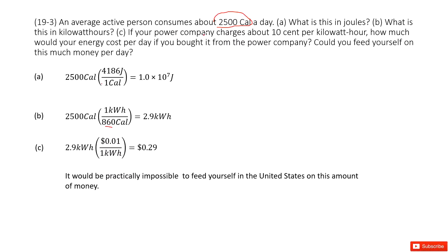If your power company charges about 10 cents per kilowatt-hour — that is too cheap; this test uses about 50 cents — how much would your energy cost per day? We have 2.9 kilowatt-hours, so you just multiply the total energy by the price. The answer is about 29 cents.